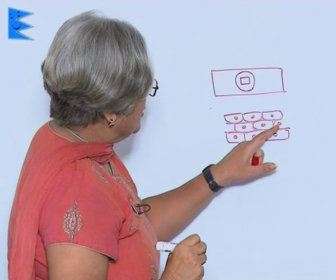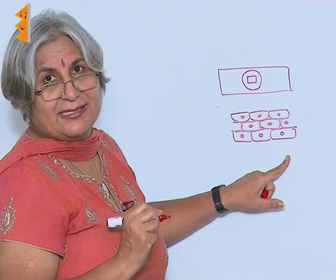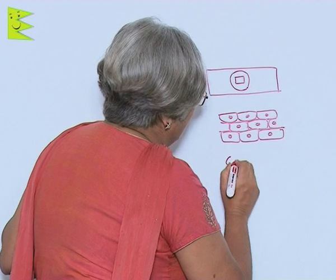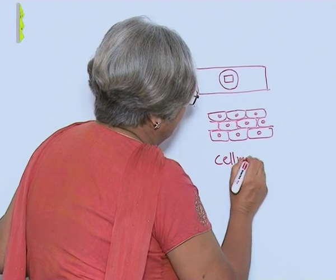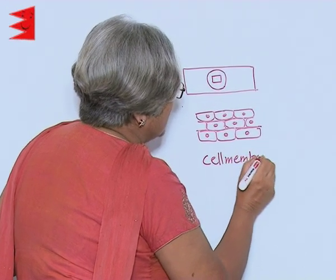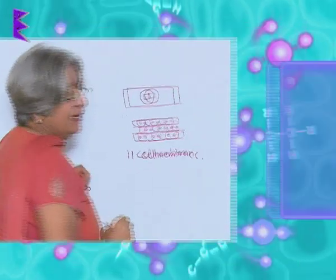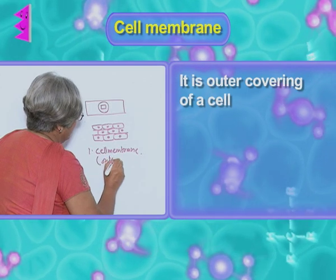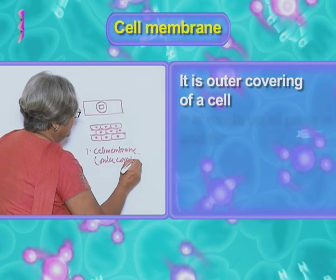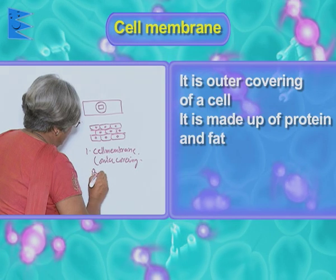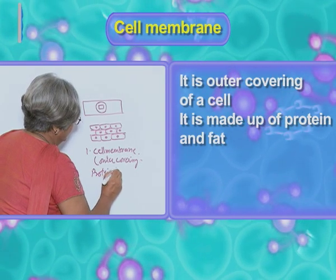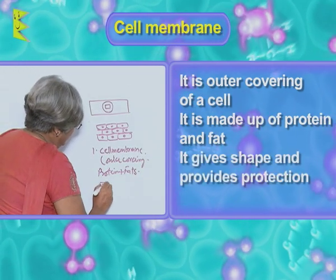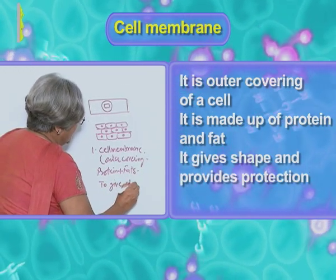You can also see demarcating lines which give shape to the cell — those are the cell membranes. Every cell is made up of an outer covering called the cell membrane, which is made up of protein and fat. Its function is to give shape and protection to the cell.